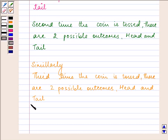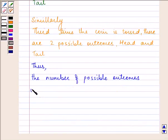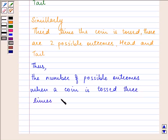So the total number of possible outcomes when a coin is tossed three times is equal to two multiplied by two multiplied by two, that is eight. So our final answer is eight.